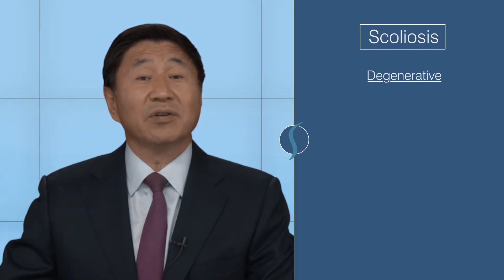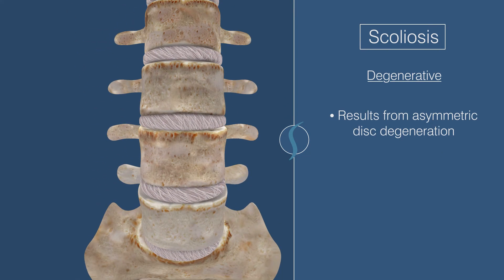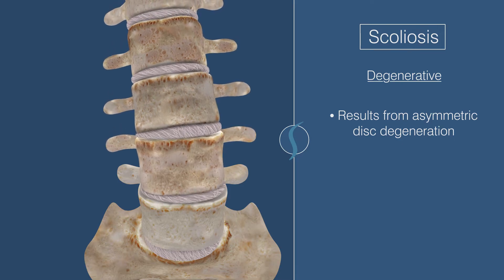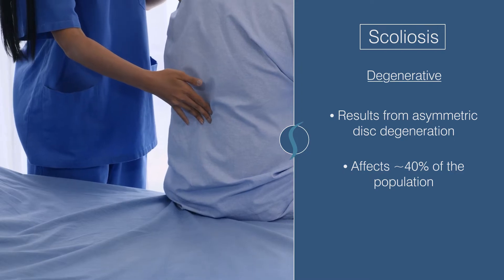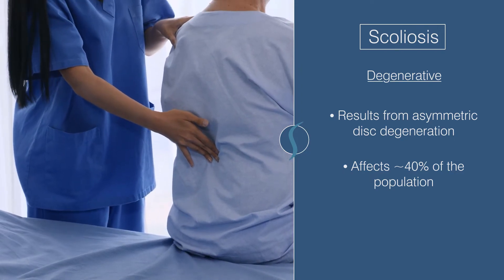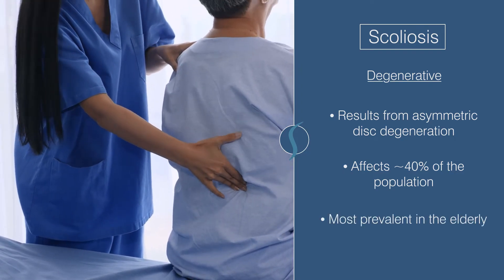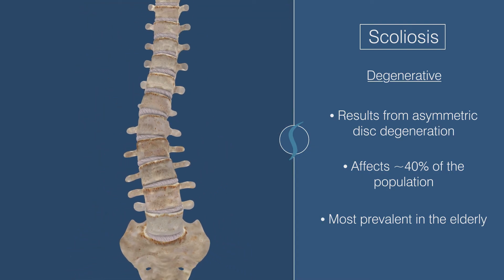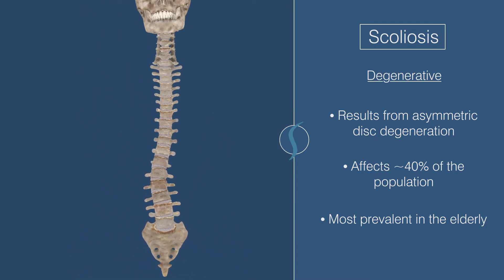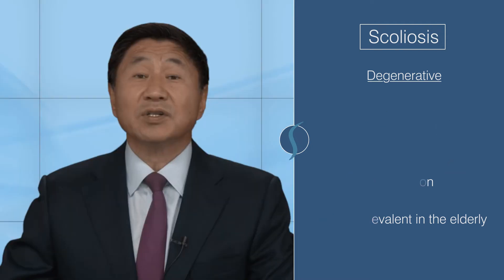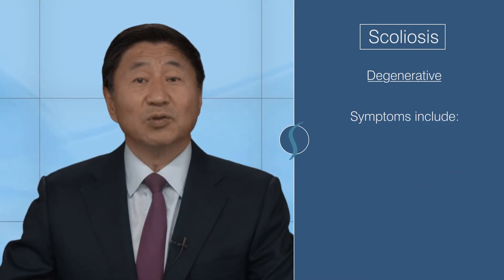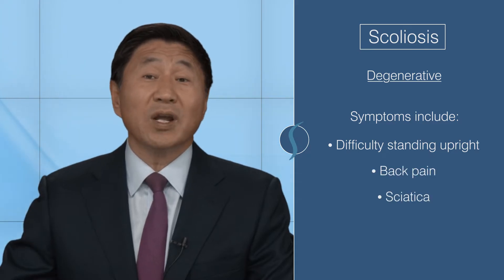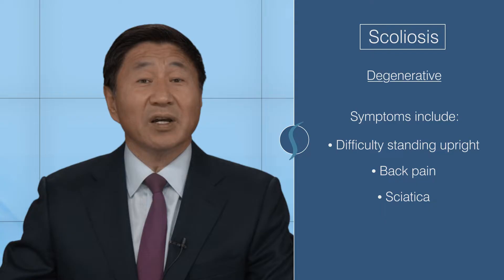Degenerative scoliosis, on the other hand, results from asymmetric disc degeneration — that is, the natural wear and tear of the spine over time — and affects roughly 40% of the population, being most prevalent in the elderly. This type usually occurs in the lower back with an average curvature of 30 to 40 degrees. Associated symptoms include difficulty standing upright, back pain, and sciatica, which is radiating pain from the lower back into the legs.